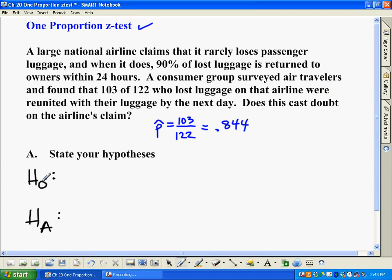Null means nothing or void, so basically what it means is there's nothing wrong with what they're saying. It is what it has been. I know it's lower than 90%, but we're saying basically it's still pretty close to 90%. So that's our null hypothesis: P equals 0.90, where P is the proportion of